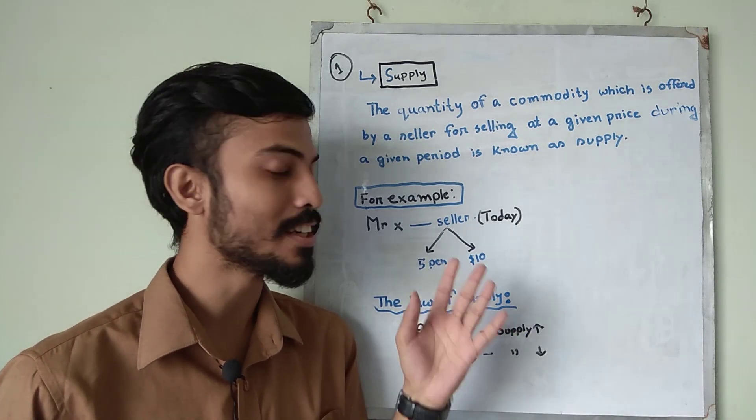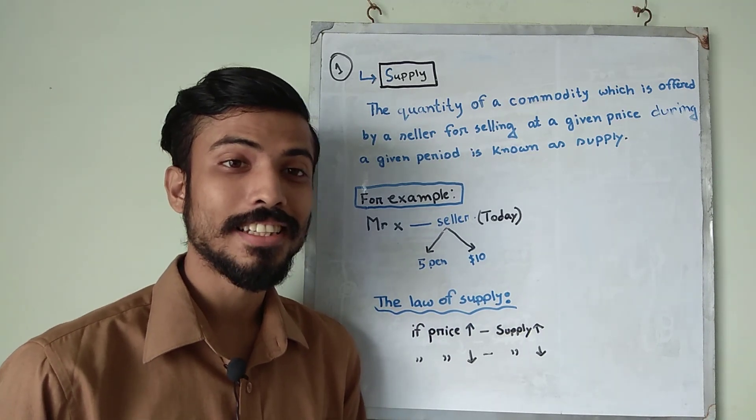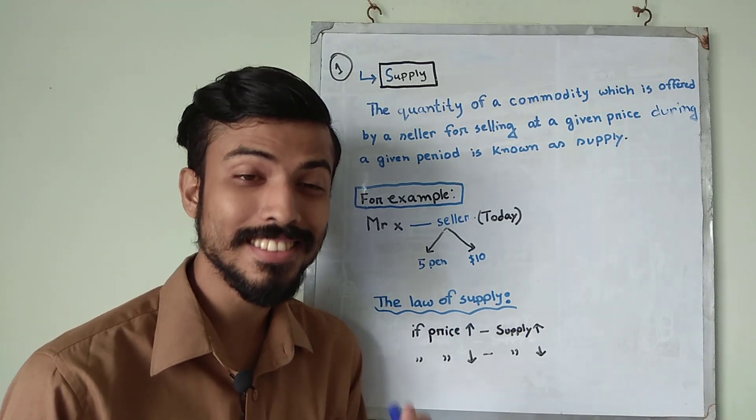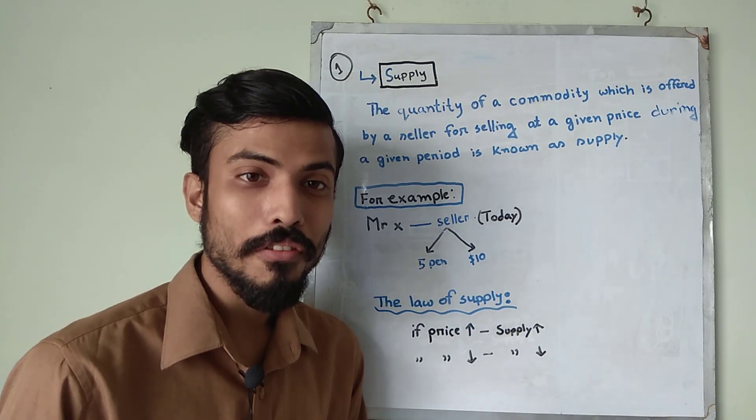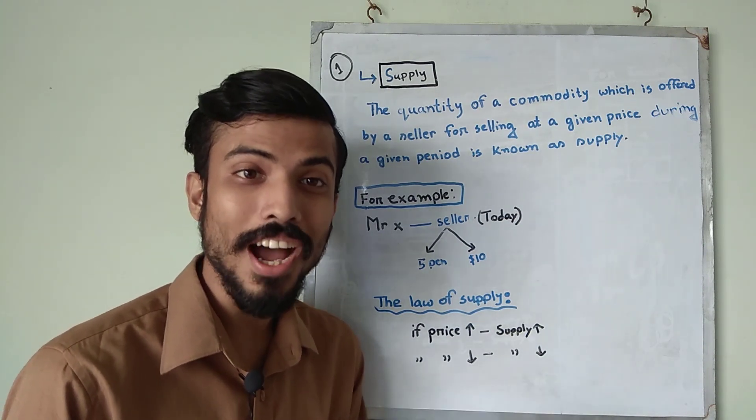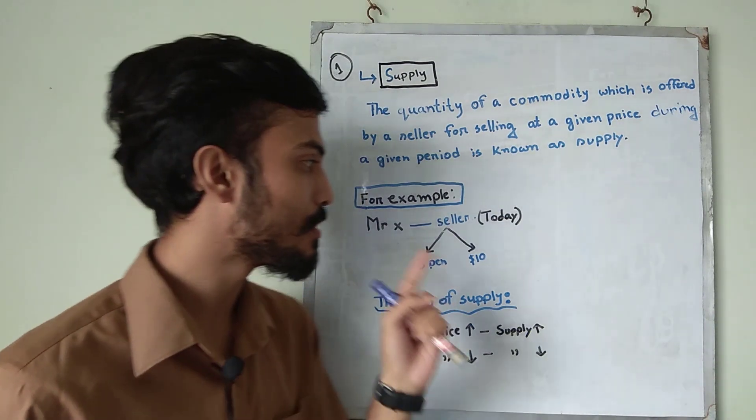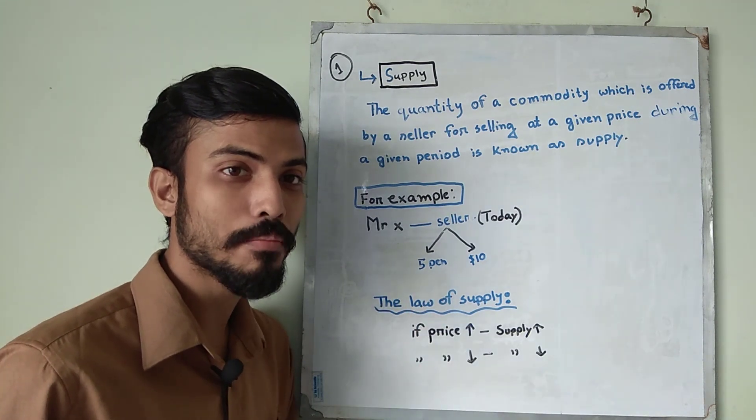The first thing we try to understand the definition of supply. So what is supply? Supply means the quantity of commodity which is offered by a seller during a specific period for a specific price is called supply. Let's just follow this example and through this example we try to understand the definition of supply.